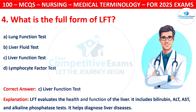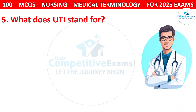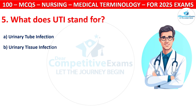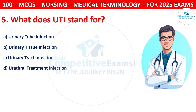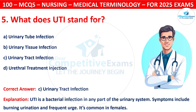Question 5: What does UTI stand for? Options are: Urinary Tube Infection, Urinary Tissue Infection, Urinary Tract Infection, or Urethral Treatment Injection. The correct answer is C, that is Urinary Tract Infection. UTI is a bacterial infection in any part of the urinary system. Symptoms include burning urination and frequent urge. It is common in females.